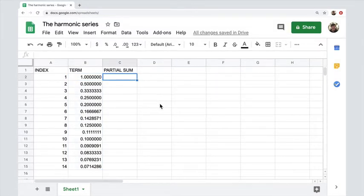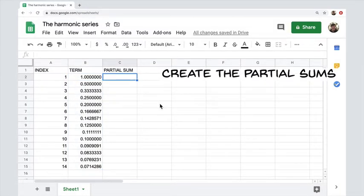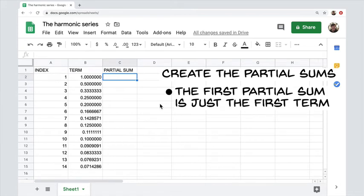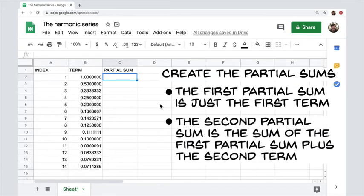Now we're ready for the partial sums. How do we create the partial sums? The first partial sum is just the first term. It's a special case. We just have to do that one specially. And then the second partial sum is the sum of the first partial sum and the second term.